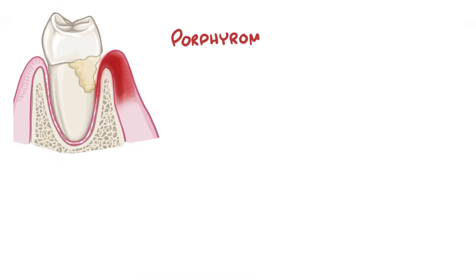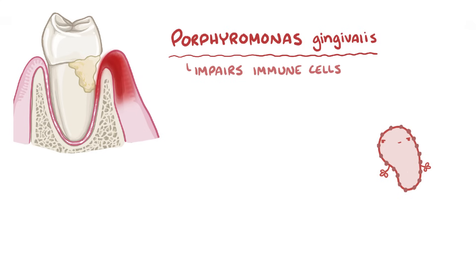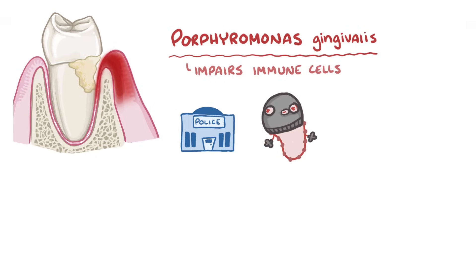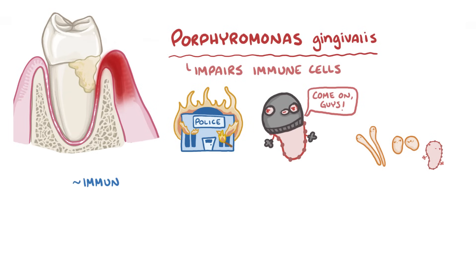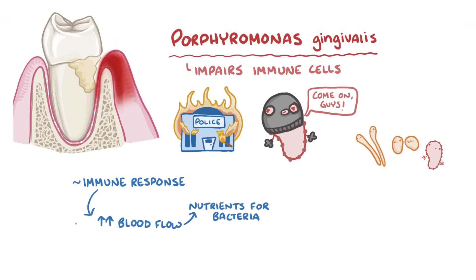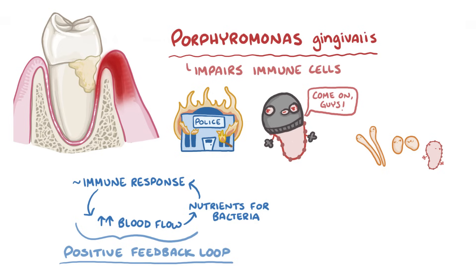That one notorious bacteria, P. gingivalis, is also known for impairing immune cells from effectively killing bacteria. This helps other pathogenic bacteria to overgrow as well, kind of like a thief that destroys the police station and allows other thieves to flourish in a city. The immune response also delivers more blood flow to the damaged tissue, which provides more nutrients for the bacteria. Together, the bacteria and immune response end up in a positive feedback loop where the expanding infection causes an increased immune response, which doesn't destroy the bacteria but provides the bacteria with more fuel to grow.